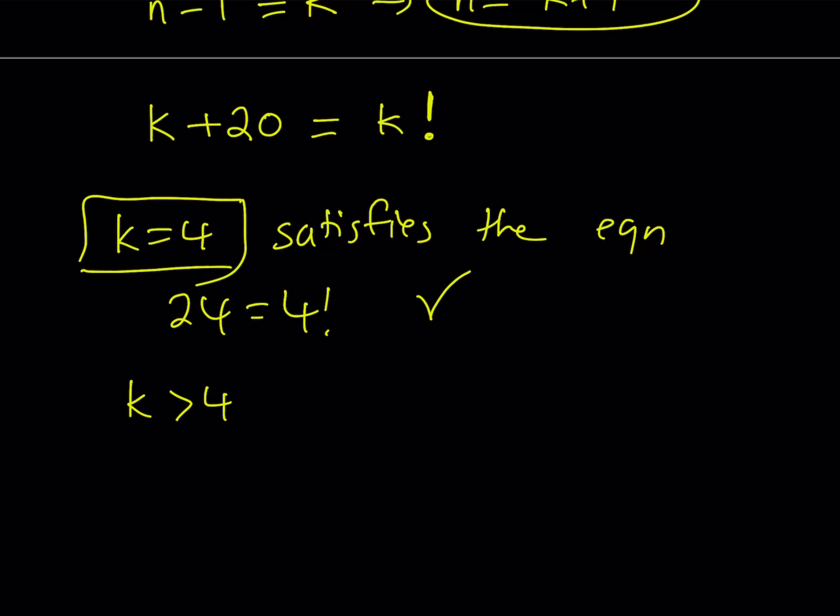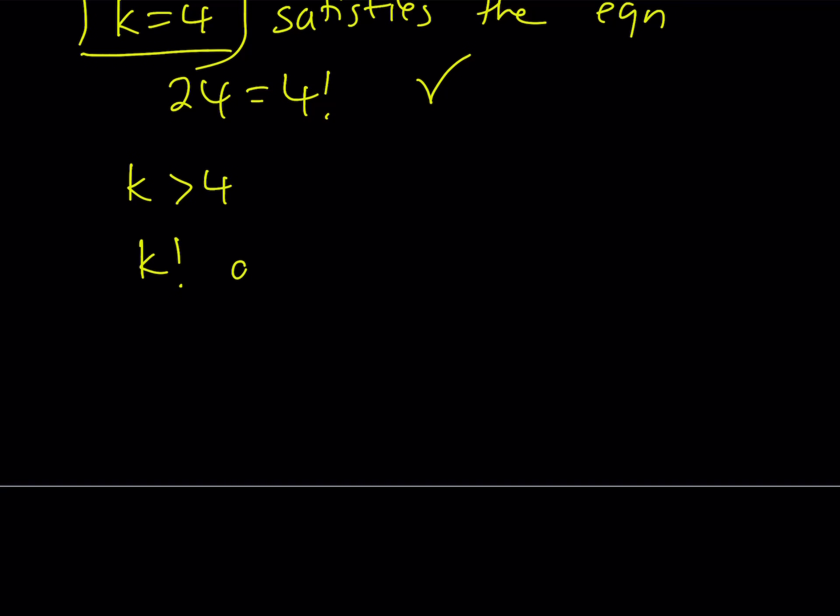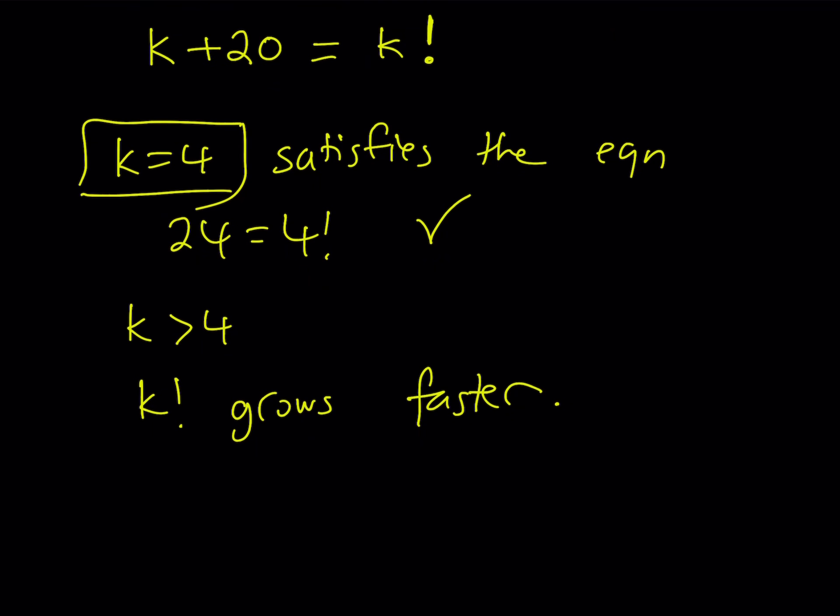k factorial obviously grows much faster than a linear function. This means they're only going to intersect at one point, and that happens to be at k equals 4.